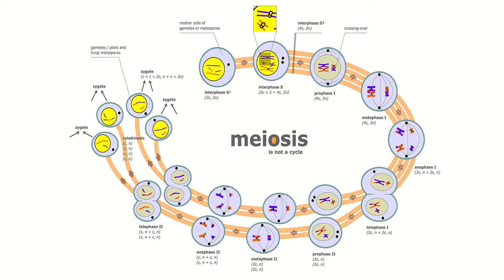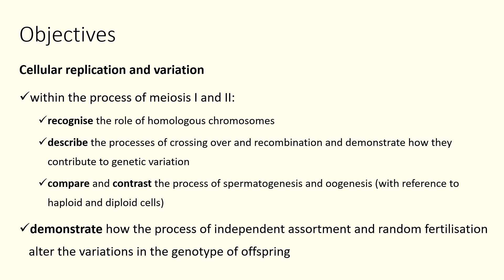Last video we looked at meiosis and talked about some processes we didn't get time to work through, such as crossing over and random assortment. Going back to our syllabus objectives, we looked at the role of homologous chromosomes and the general processes within meiosis, but we didn't cover the processes that relate to genetic variation: crossing over, recombination, independent assortment, and random fertilization.